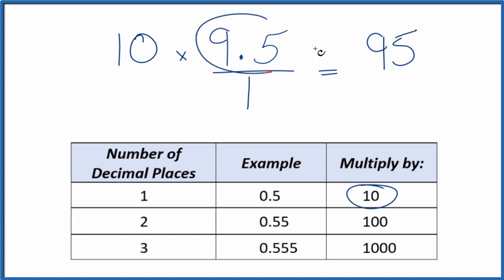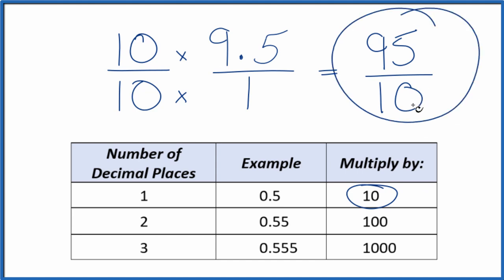But we can't just multiply the numerator by 10, we also need to multiply the denominator by 10. Let's get 10 divided by 10, that's 1. So we don't change the value, just the way it's represented. So 10 times 1 is 10. And we end up with the decimal 9.5 equals the fraction 95 tenths.